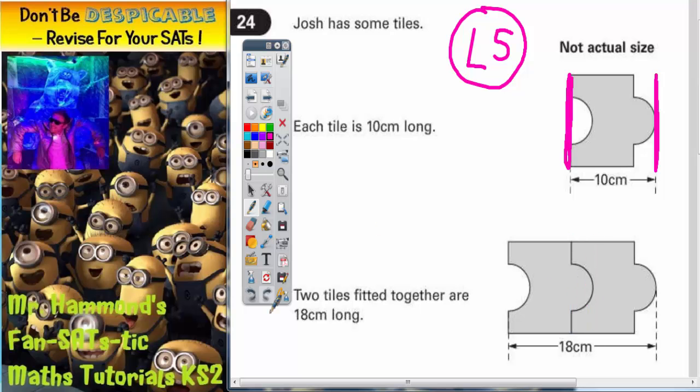So what we need to do is we need to have another strategy. We need to figure out the extra bit once one tile is fit on top of the other. So if from the start of this first tile here to the end of the first tile here, if that is 10 centimeters...